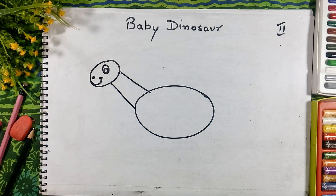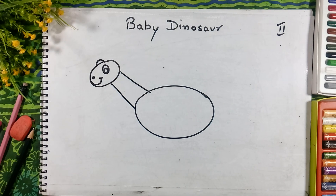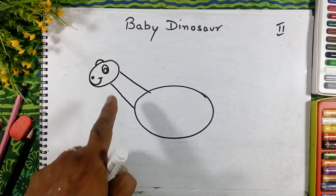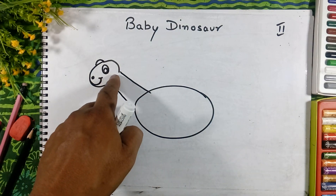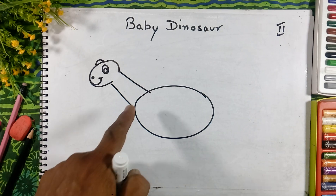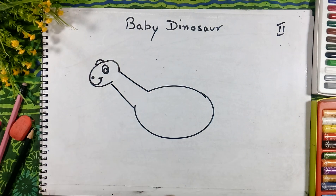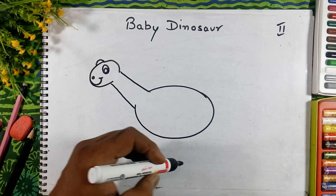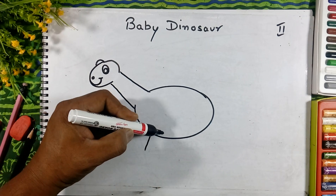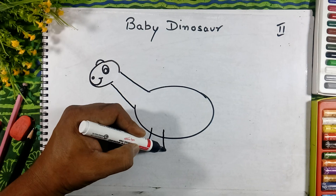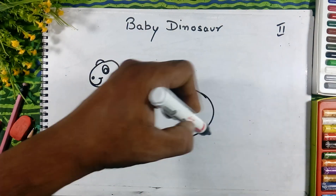I will draw the eyes here and a smiley face, and the small nose here. The second eye is on that side. We will drop this line like this and drop the line like this one also.